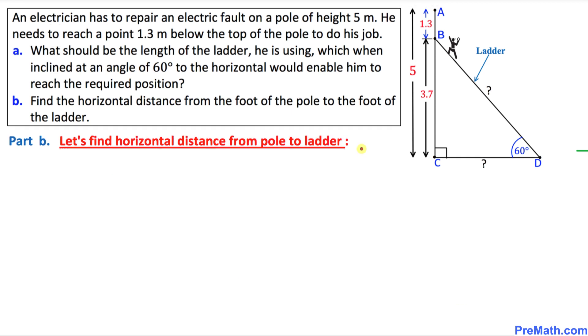And now, in our next step, we are going to calculate the horizontal distance from the foot of the pole to the foot of the ladder. That means we are going to calculate CD. We are looking for the value of CD. And this time, we will be using tangent theta equal to opposite over adjacent. This side we call adjacent, and this side is our opposite.